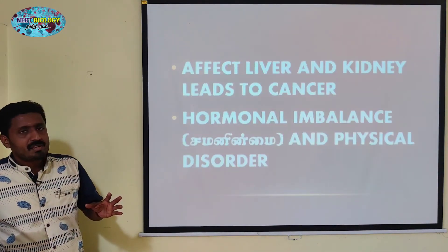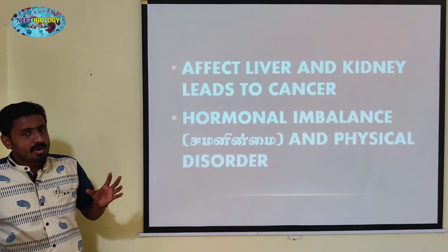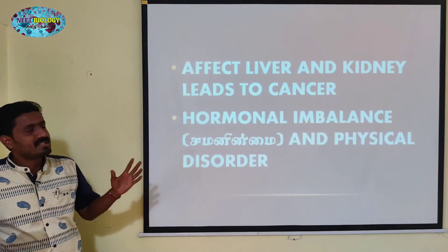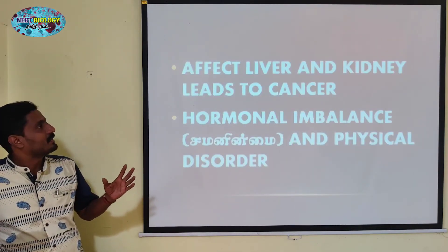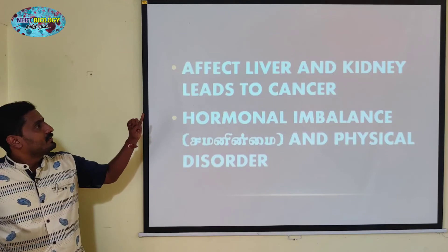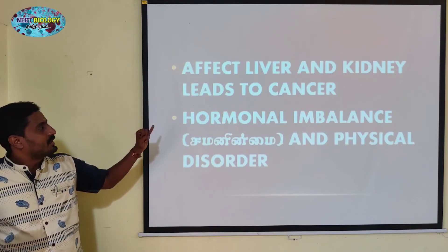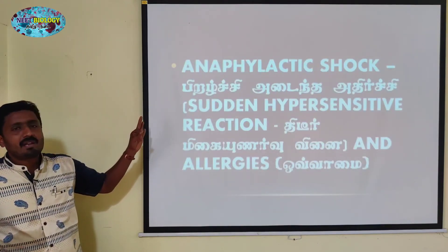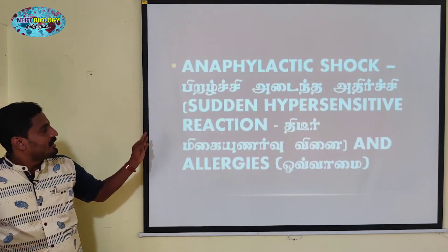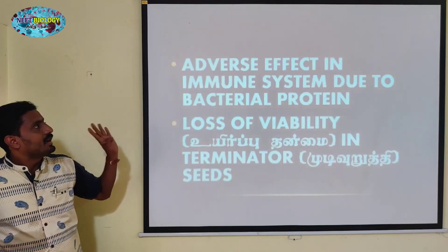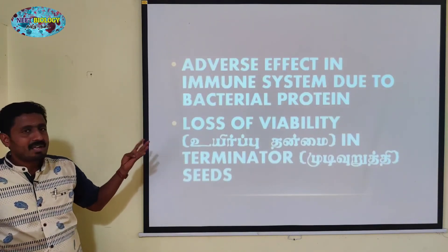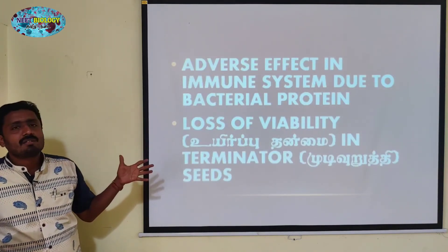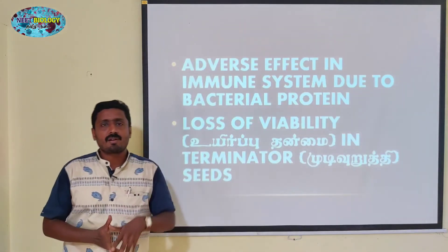In this video, we have seen the changes of genetically modified food. The risks are: kidney, liver, hormonal imbalance, anaphylactic shock, adverse effect on the immune system, and loss of viability. So that is this fifth point explained.